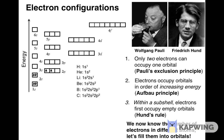For nitrogen, atomic number 7, the first six electrons occupy the same orbitals as for carbon. The seventh electron is placed in the last empty orbital in the 2p subshell, using the same reasoning as we discussed for carbon. The electron configuration for nitrogen is 1s² 2s² 2p³.